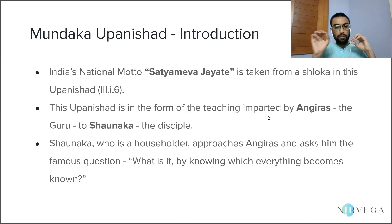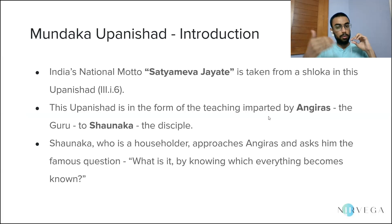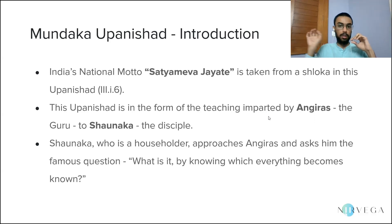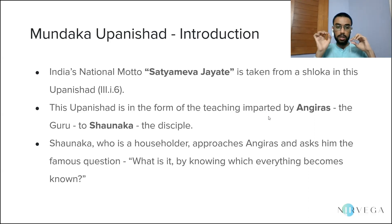This Upanishad is in the form of the teaching imparted by Angiras, the Guru, to Shaunaka, who is the disciple. This is one of those Upanishads which are in the form of a conversation between a Guru and a Shishya. Shaunaka, who is a householder, approaches Angiras and asks the famous question: 'Kasmin nu bhagavo vijñate sarvam idam vijñatam bhavati' — what is it by knowing which everything becomes known? The answer given by Angiras forms the remainder of the Upanishad.